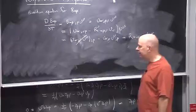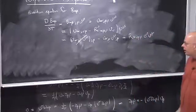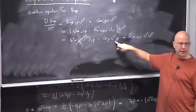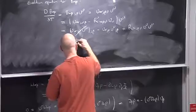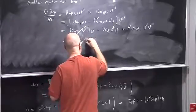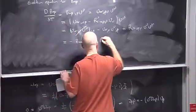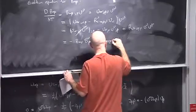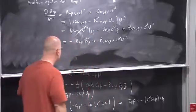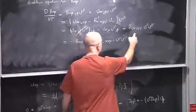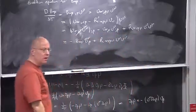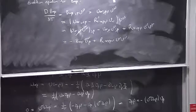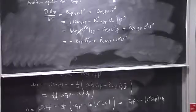So my evolution equation for B is: u^μ ∇_μ B_αβ = –B_αμ B^μ_β + R_{αμβν} u^μ u^ν, where I've relabeled indices using the symmetry of the u^μ u^ν combination. That's my evolution equation for B. From this I can apply the decomposition into irreducible pieces and infer separate evolution equations for theta, sigma, and omega.